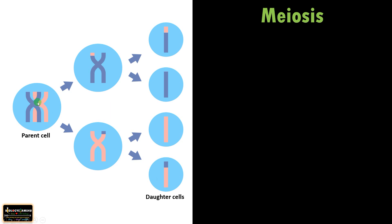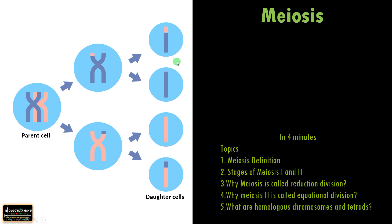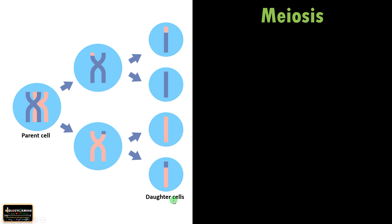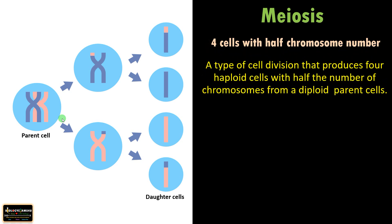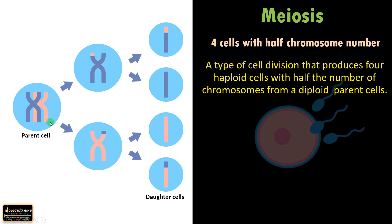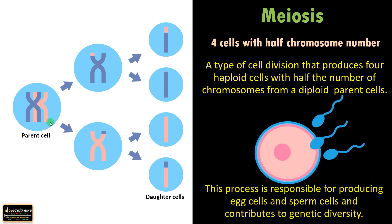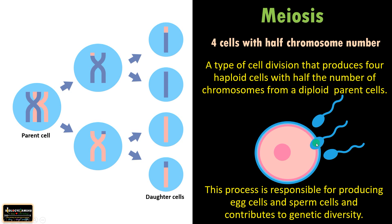Let us define meiosis. From a parent cell, four cells are formed after two divisions, and the chromosome number of the daughter cells is reduced to half compared to the parent cell. We can define meiosis as a type of cell division that produces four haploid cells with half the chromosome number from a diploid parent cell. Meiosis is essential for sexual reproduction as it forms egg cells and sperm cells, and also contributes to genetic diversity.